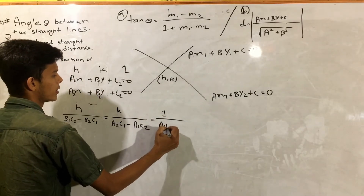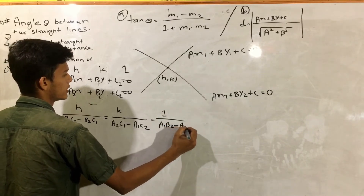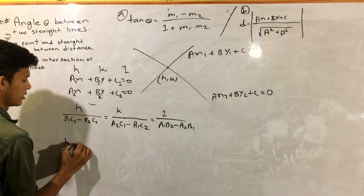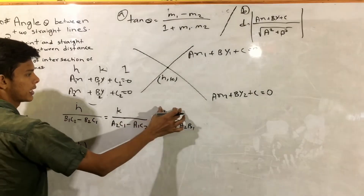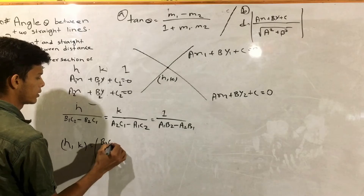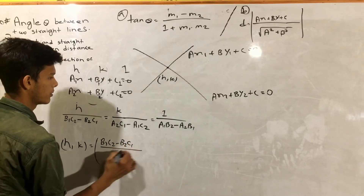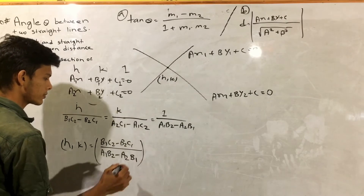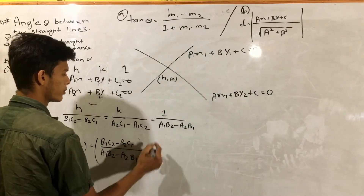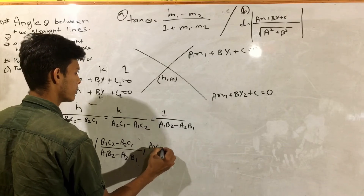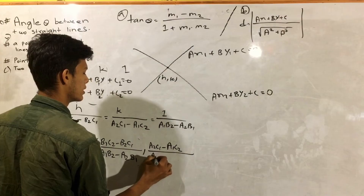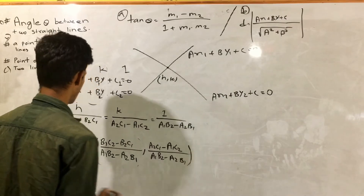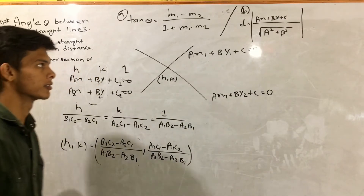There are two in the first half: a1 b2 minus a2 b1. So this will be a1 b2 minus a2 b1. So this will be b1c2 minus b2c1 divided by a1 b2 minus a2 b1.